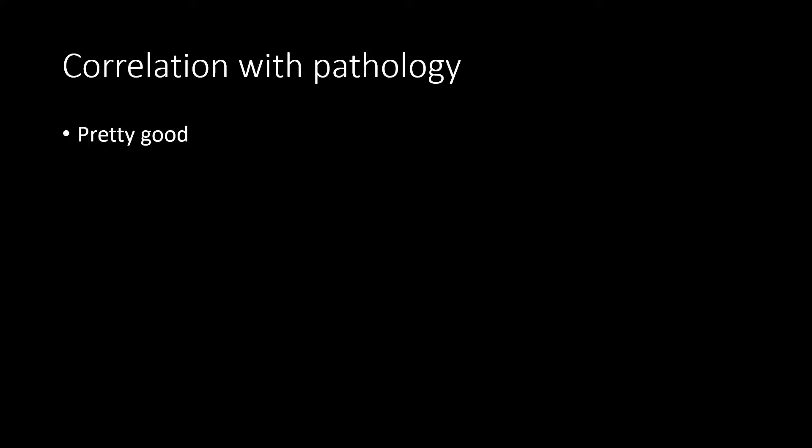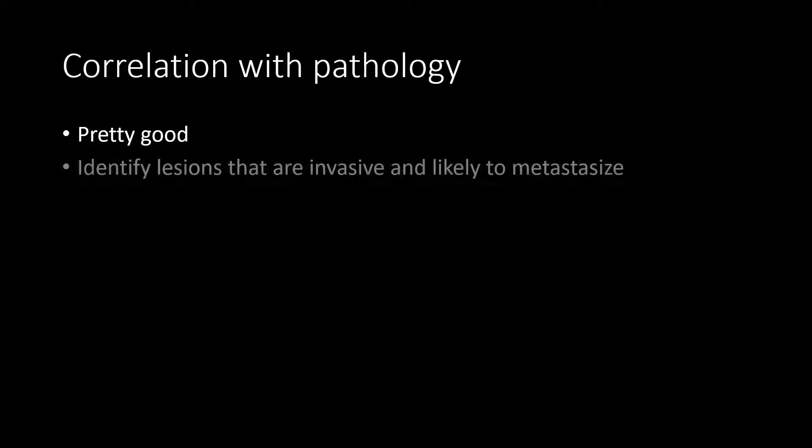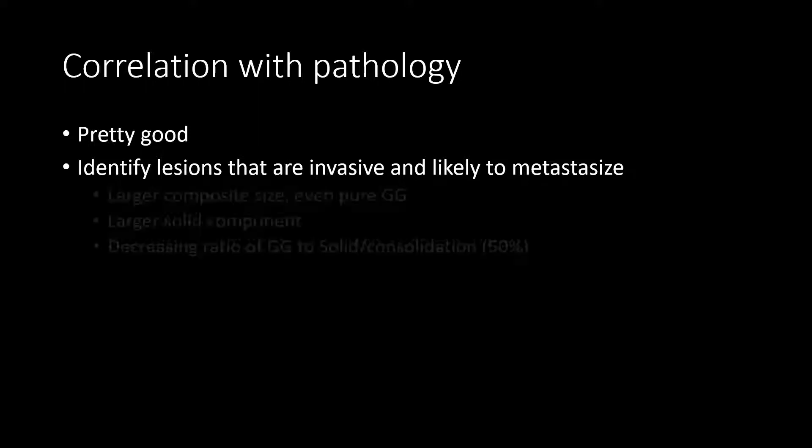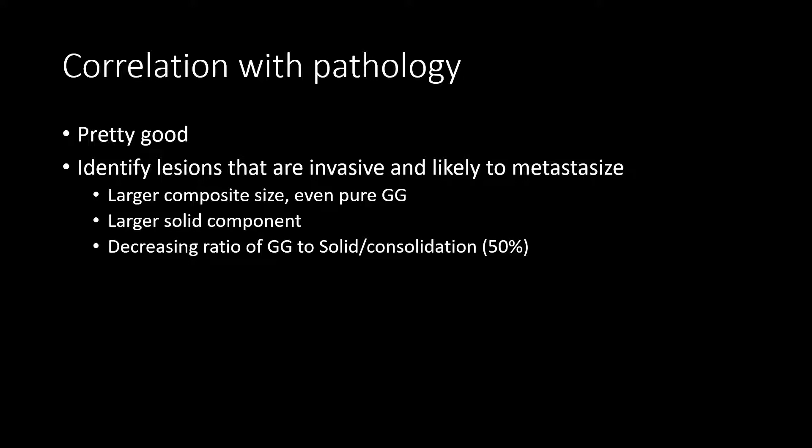CT correlates well with pathology — ground glass representing lepidic growth and solid component representing the invasive component. Predictors of invasiveness and metastatic potential include the largest composite size: even purely ground glass lesions above 12-15 millimeters have increased likelihood of being invasive. A solid component of 9 millimeters shows 100% specificity for invasive adenocarcinoma, and a consolidation-to-ground-glass ratio greater than 50% is also associated with greater likelihood of invasion.